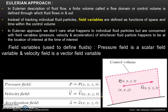Field variables basically define the fluids. There are three types of field variables: first is pressure field, second is velocity field, and third is acceleration field. Pressure field is a scalar field variable as it has only magnitude and is a function of space (x, y, z) and time t. Whereas velocity field and acceleration field are both dependent on space (x, y, z) and time t, and both have magnitude and direction.